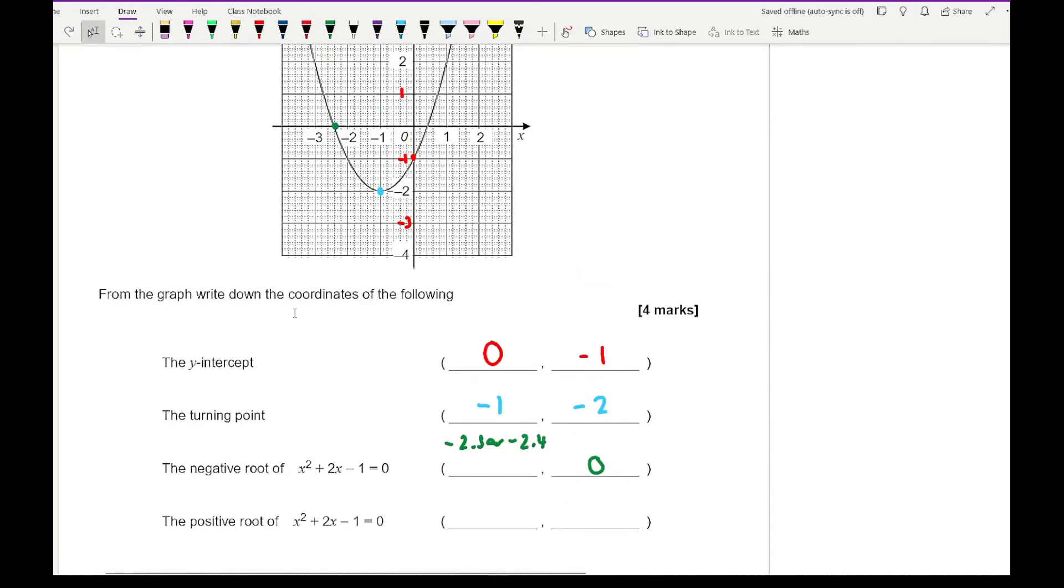And then for the positive root, well that's going to be this number here in which they would accept any answer between 0.4 and 0.5. And it's going to be a 0 there for the y-ordinate.